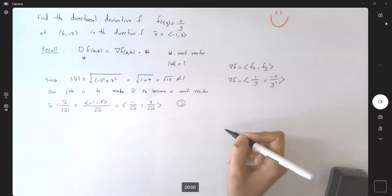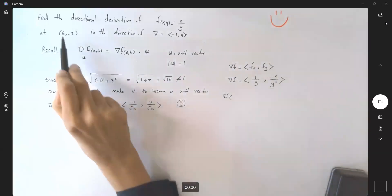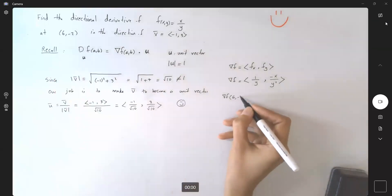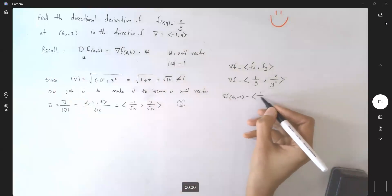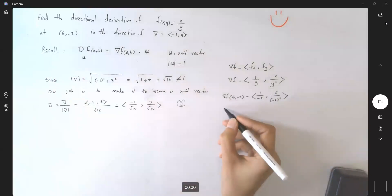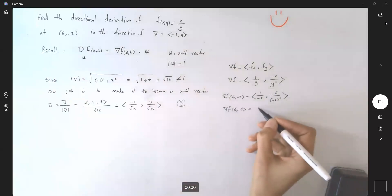Very well. So the gradient of function f at the given point (6, -2) is nothing but the vector 1 divided by -2, and -6 divided by (-2)² = 4. The gradient of function f at (6, -2) is vector (-1/2, -3/2).